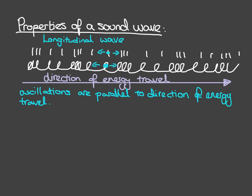Hopefully your diagram of a longitudinal wave looks a little bit like this. There are two versions here — a side view of a slinky with a longitudinal wave and a plan view from above. In our longitudinal wave, we've got points oscillating backwards and forwards, and this is the direction of energy travel. In a longitudinal wave, the oscillations are parallel to the direction of energy travel. A sound wave is a longitudinal wave, so the medium it's traveling through oscillates in this orientation.